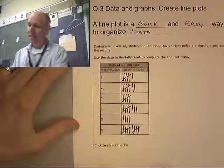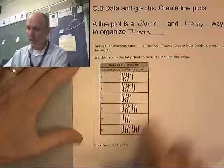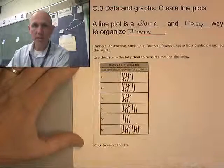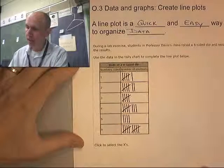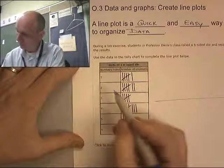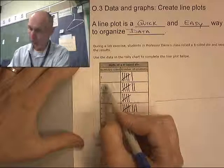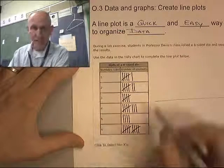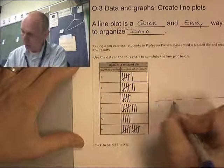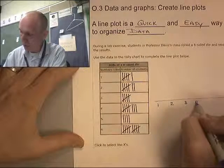Here's how it works. We're going to use this data right here to quickly make a line plot. My data goes from one to six, so I'm going to go from one to six on my line: one, two, three, four, five, six.